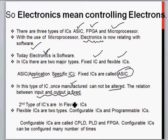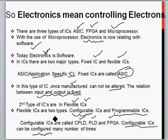Now the second type of IC are called flexible ICs. In flexible ICs, there are again two types: configurable ICs and programmable ICs. Configurable ICs are called CPLD, PLD, and FPGA. Configurable ICs can be configured many times.